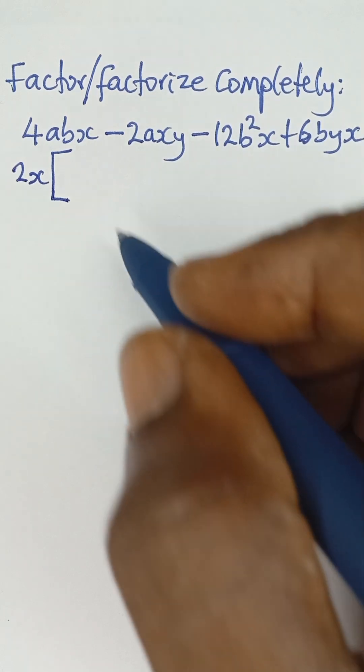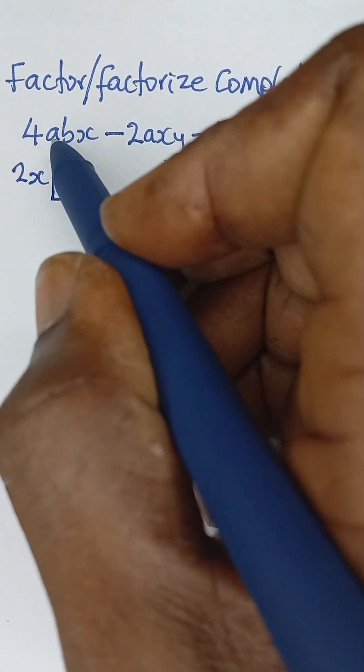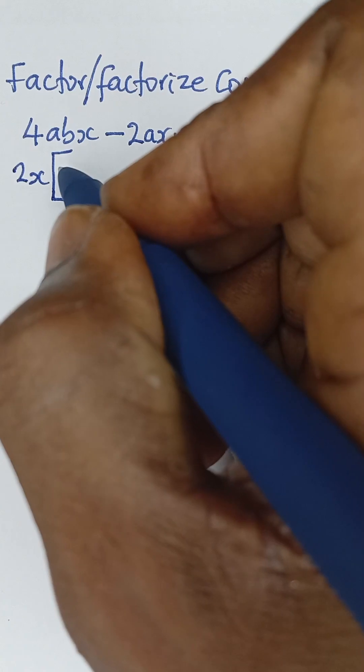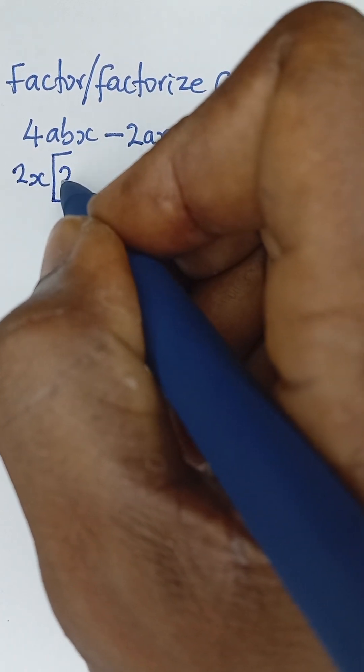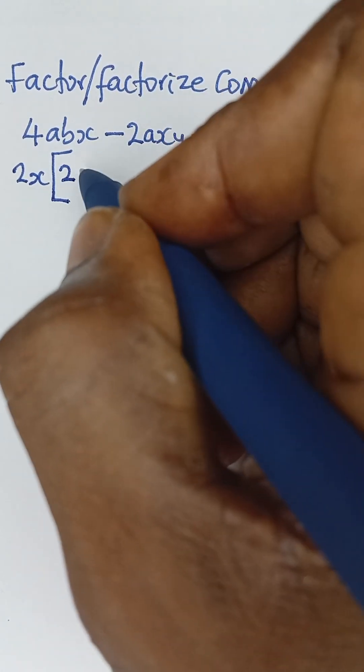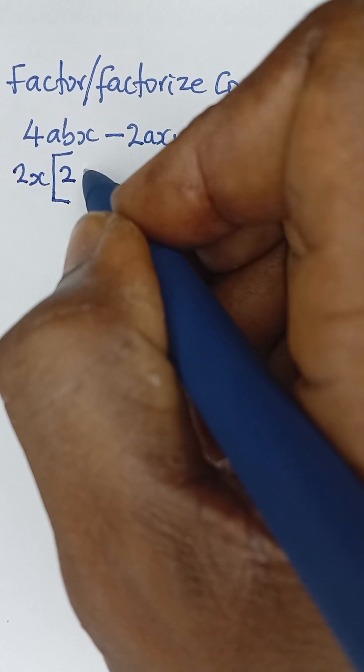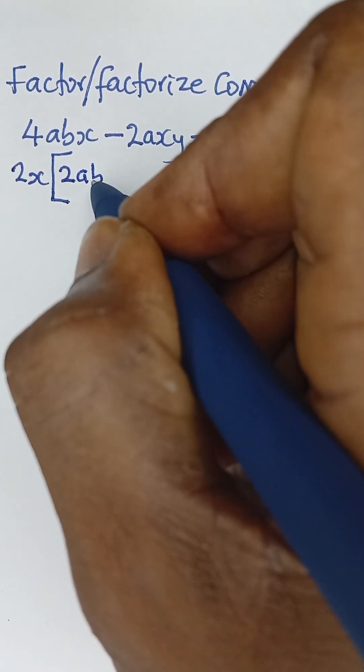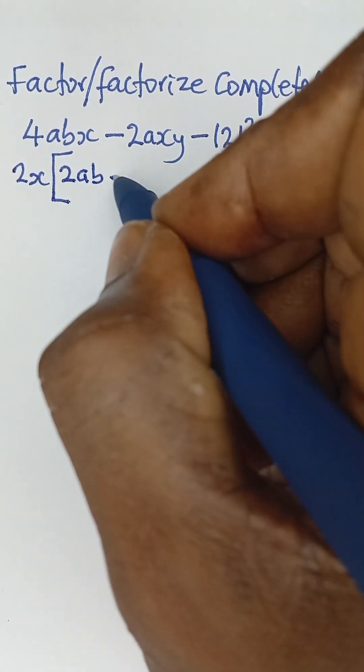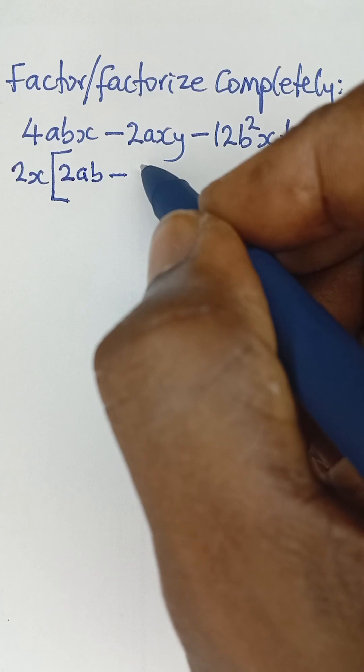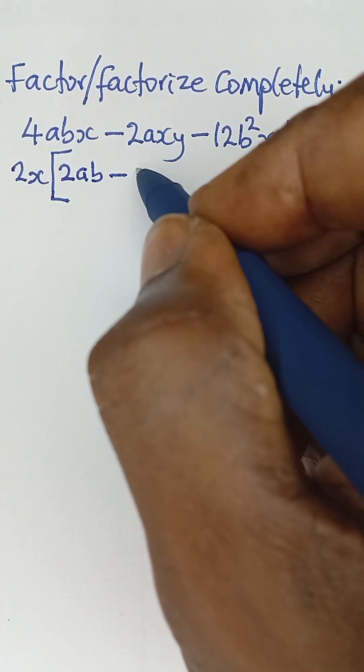And then what is left, 4abx divided by 2x, I'll be left with 2. And then remaining ab, 2ab. And then minus, this divided by 2x, I'll be left with just ay.